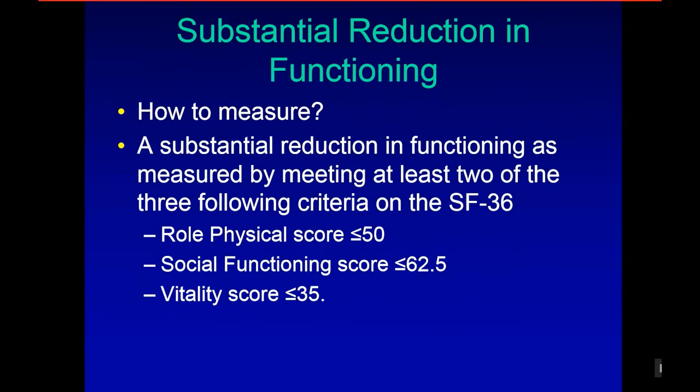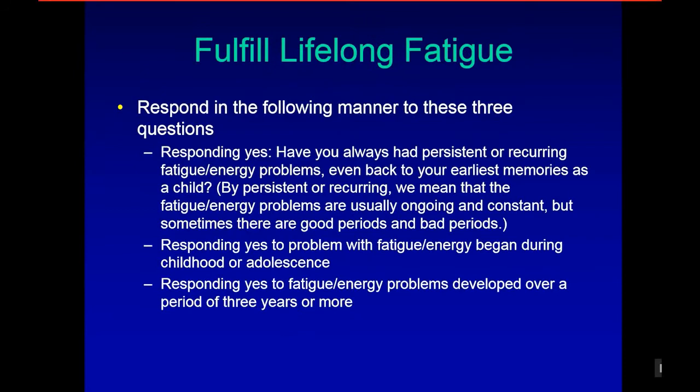What we do is measure substantial reduction in functioning using the SF-36, where we say three scores: role physical scale less than or equal to 50, social functioning less than or equal to 62.5, vitality score less than or equal to 35. We operationalize it that way and have some data to support those particular cutoffs.